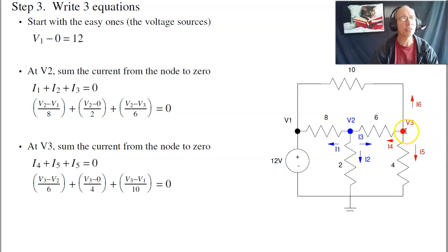Now write the node equation to V3. Current left, down, and up equal zero. That's the current left is V3 minus V2 over 6. Current down is V3 over 4. Current up is V3 minus V1 over 10. And again note that at this node, all the V3s are positive. Everyone else is negative.